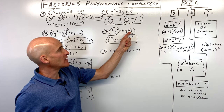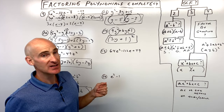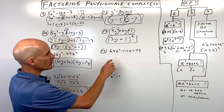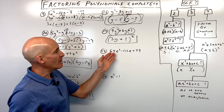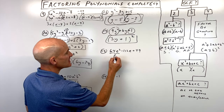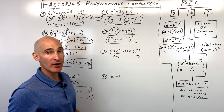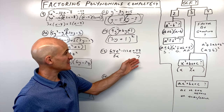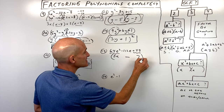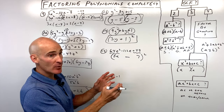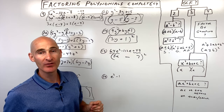Number fifteen, a trinomial with leading coefficient not 1. Is the first term a perfect square? Yes — that's 8e. Is the last term a perfect square? Yes — that's 7. Is 8e times 7 doubled equal to 112e? 8e times 7 is 56e, doubled is 112e. Since the middle term is minus 112e, this factors as 8e minus 7 quantity squared. To check, multiply 8e minus 7 by 8e minus 7 to get back to the original polynomial.